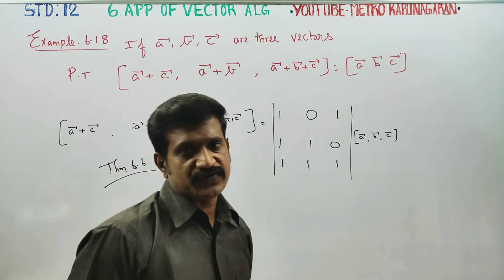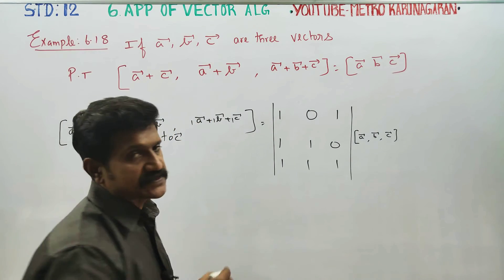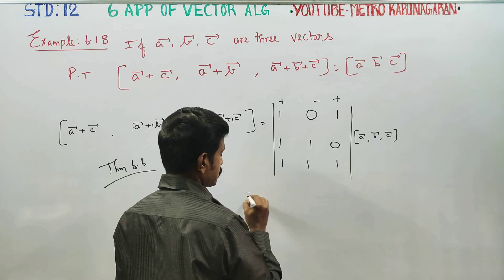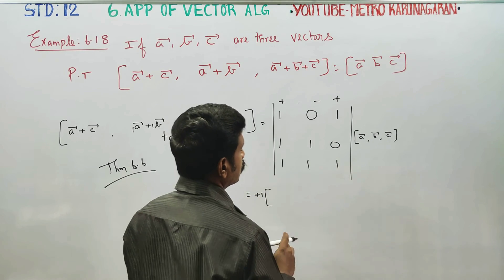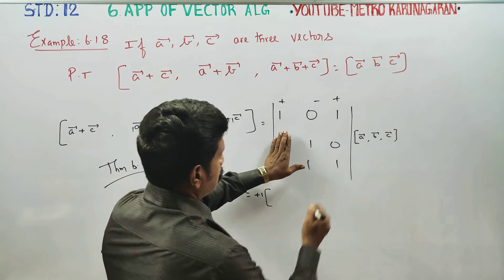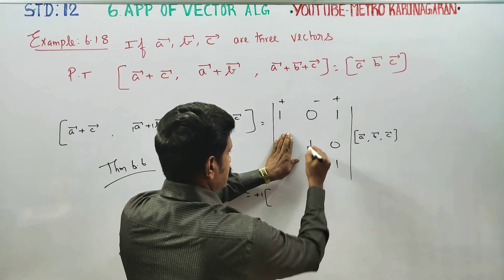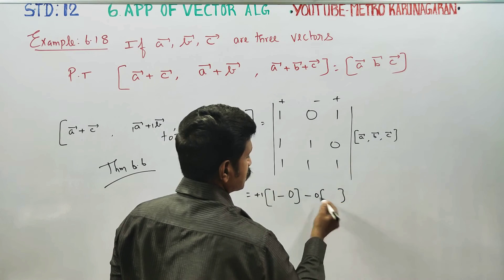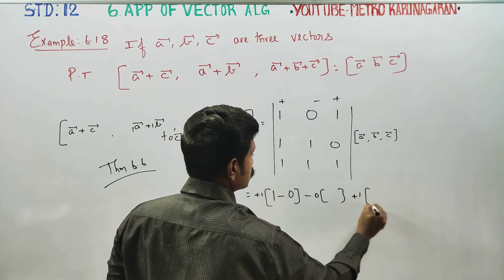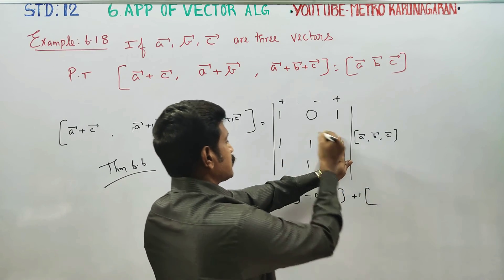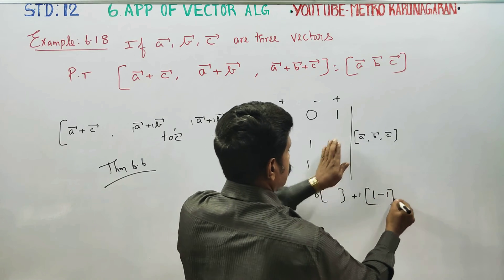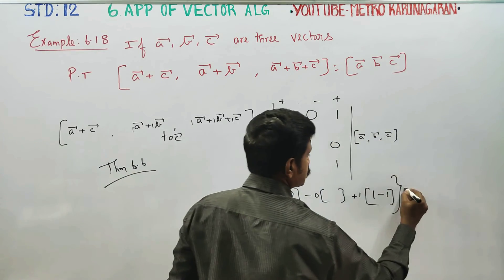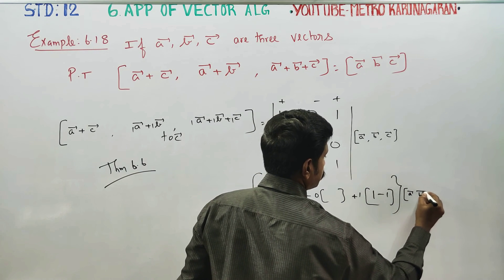So if you expand your answer, the theorem 6.6 will be the theorem. Plus minus plus, plus 1 into right hand side minus left hand side, 1 into 1 minus 1 into 0 is 0. Minus of 0 into anything 0 is 0.